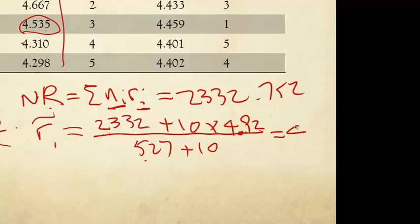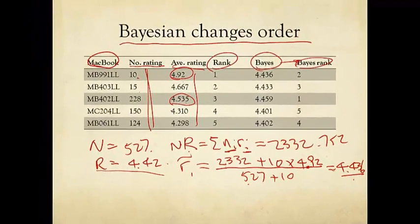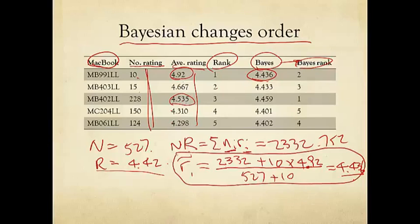And the resulting number is 4.436, which is much lower than 4.92, because relative to the total number of ratings, 10 is a small number. So the Bayesian adjusted average is 4.436. We calculate the same formula for the other four products. We get these four numbers.